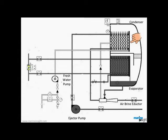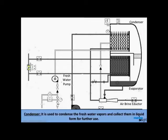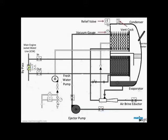Condenser. To condense the freshwater vapors and collect them in liquid form for further use. The other components of the freshwater generator are main engine jacket water line with a bypass valve, relief valve, vacuum gauge, thermometer, a vent cock which must be shut before operating the freshwater generator. Now let's understand the operating procedure of this equipment.